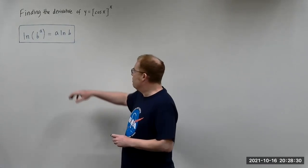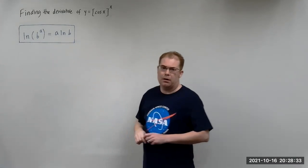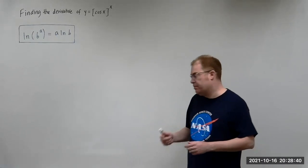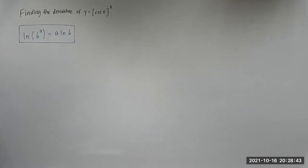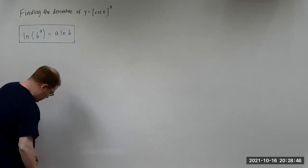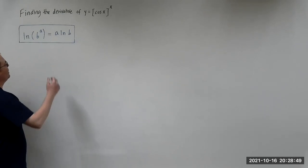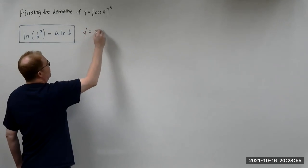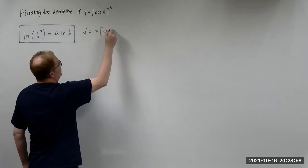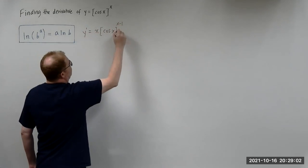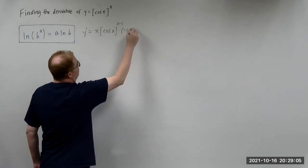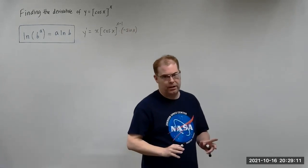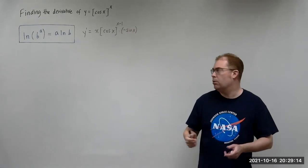The key to doing this is in this box right here. But before we proceed, I want to mention a mistake that some students make. What they will do is say, taking the derivative, y prime, and then bring down the x — so x times cosine x, all raised to the x minus 1, then take the derivative of the inside, which gives minus sine of x. This is not correct.